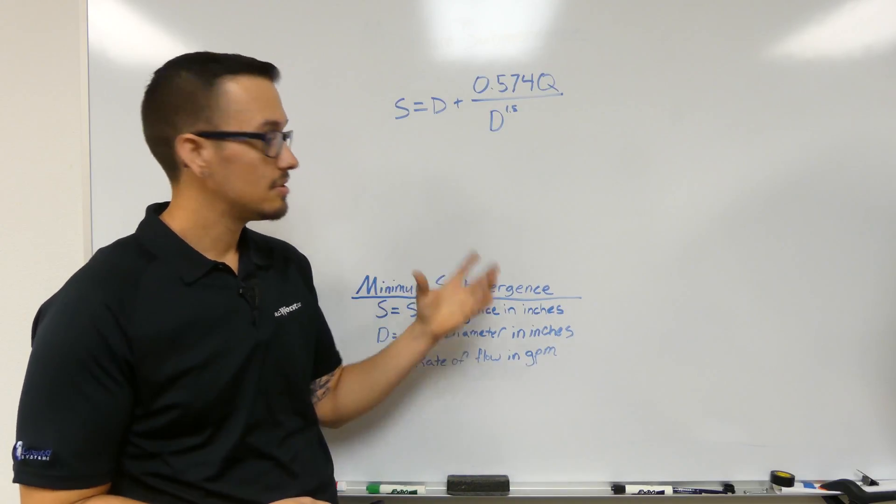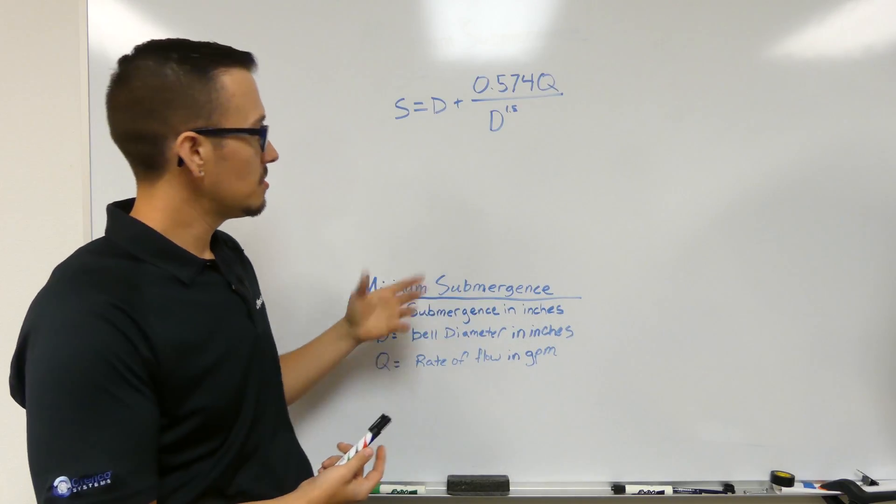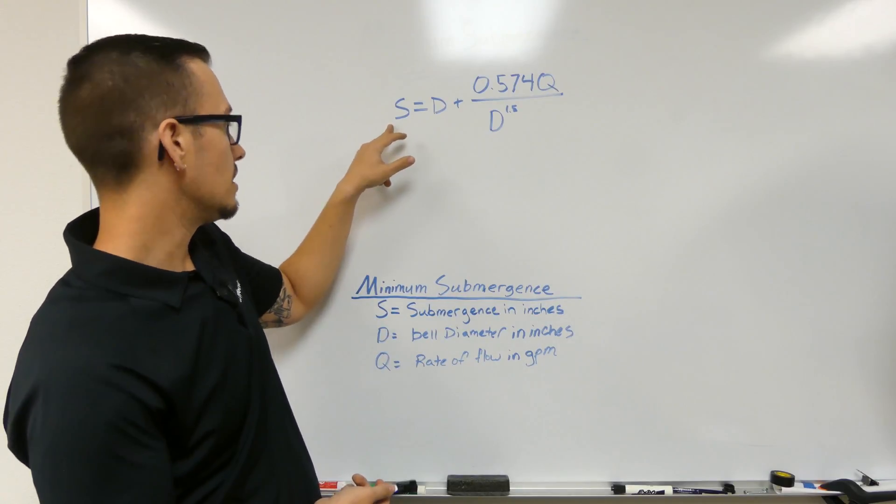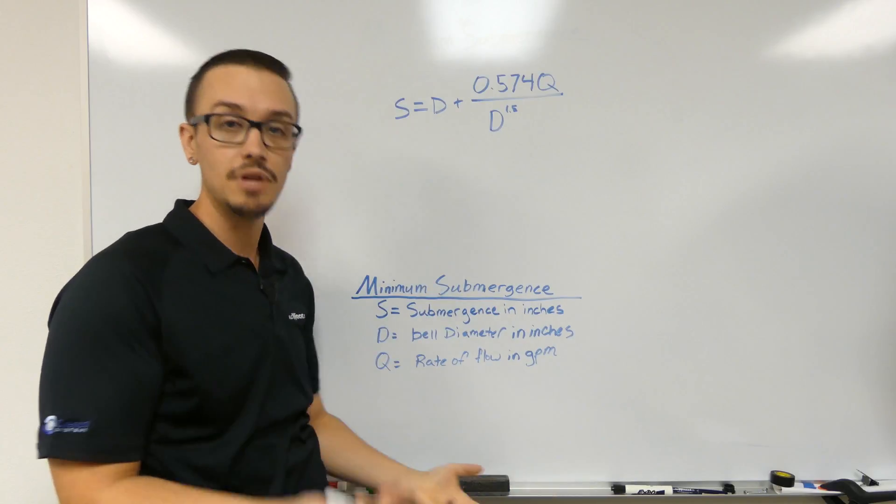So enough rambling about that. Let's talk about this formula. This formula might look a little intimidating, but it's actually pretty easy. So S is the submergence in inches. D is the bell diameter, which would be your pipe diameter.